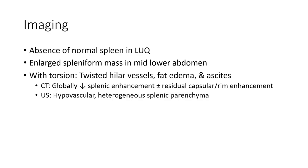Imaging can show absence of the normal spleen in the left upper quadrant and a large splenic-form mass in the mid to lower abdomen. With torsion, there is twisting of the large vascular pedicle and ascites. On CT, there is globally decreased splenic enhancement with possible residual capsular ring enhancement. On ultrasound, a hypovascular heterogeneous splenic parenchyma is seen in cases of wandering spleen with torsion.